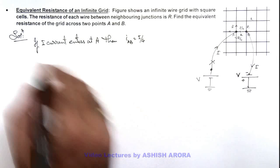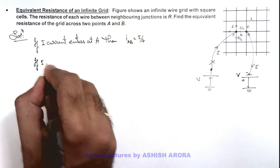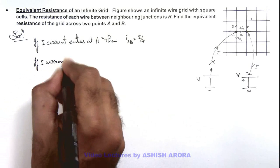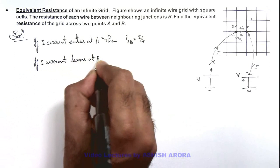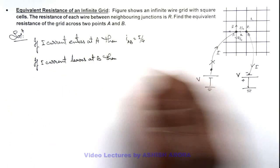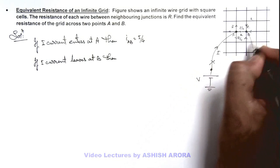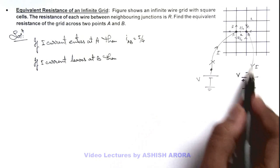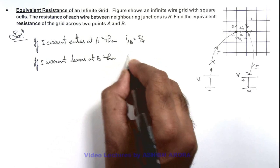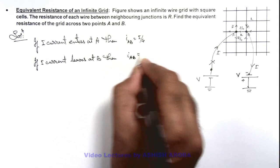Then again we can see, if I current leaves at B, then by symmetry we can see from point B in all four branches I by 4, I by 4 will be contributed, and this current I is constituted. So here again I_AB is equal to I by 4.